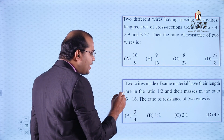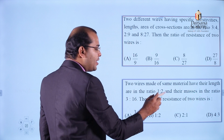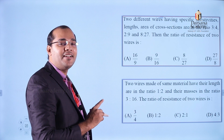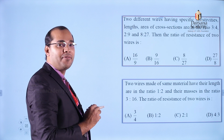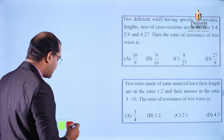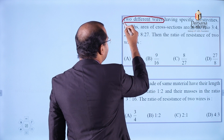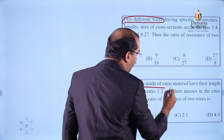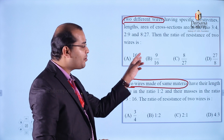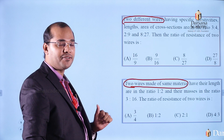The second question: two wires made of the same material have their lengths in the ratio 1:2 and their masses in the ratio 3:16. We have to find the ratio of resistance of the two wires. We have to solve these questions.